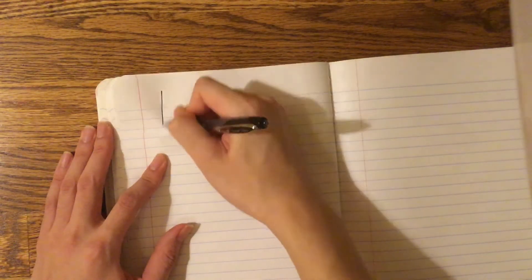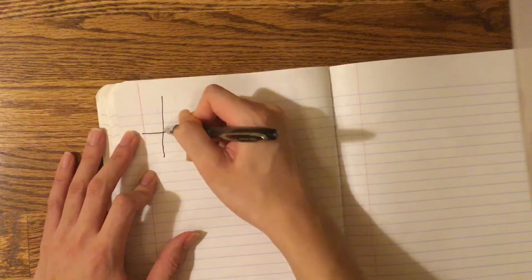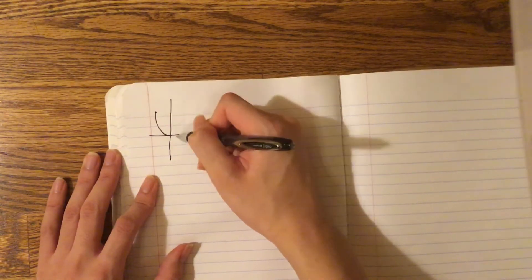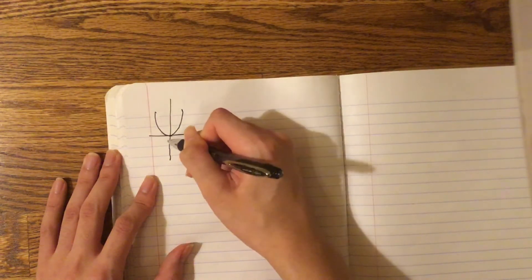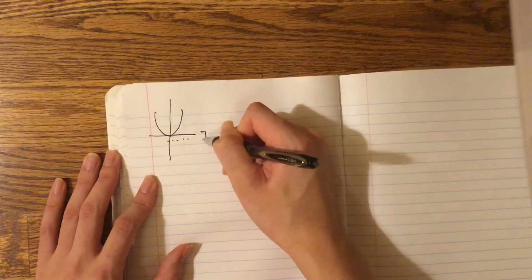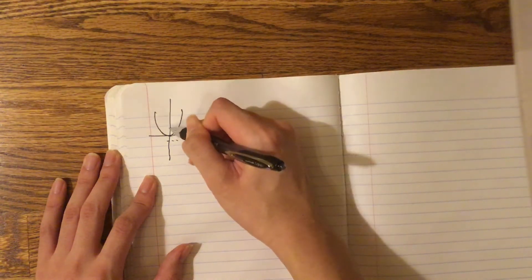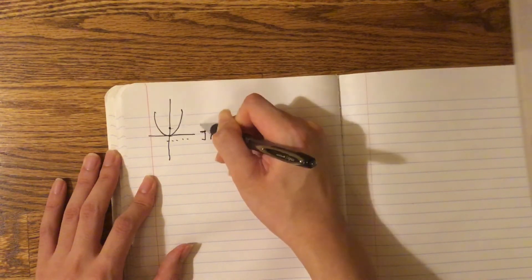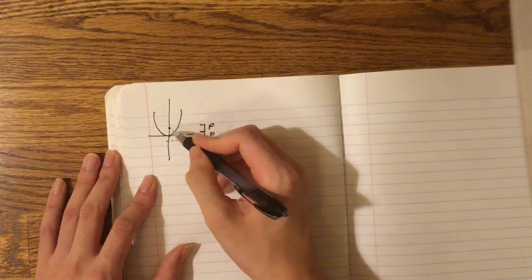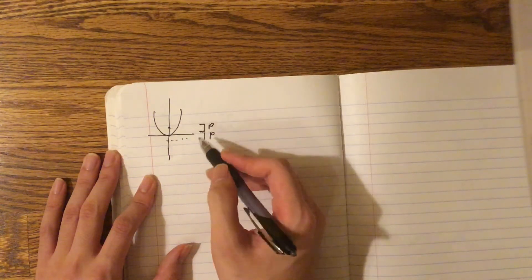So today I'll be proving that a parabola has a focus and a directrix here, it's a distance p away, and a focus here, it's also a distance p, so the distance between the focus and directrix is 2p.